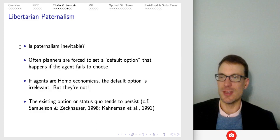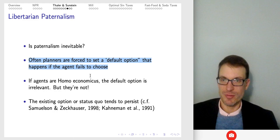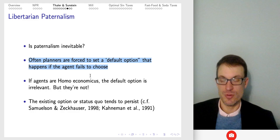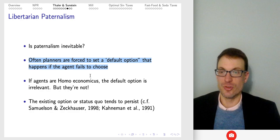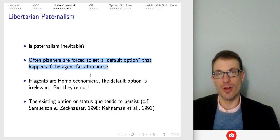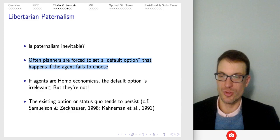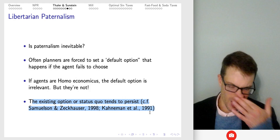Is paternalism inevitable? Often planners are forced to set some default option that happens if the agent fails to choose. Think about organ donation — in all the states I've lived in, when you go get your driver's license, you have the ability to opt in to be an organ donor, but by default you're not. Same with voting registration — by default you're not enrolled as a registered voter; you have the ability to opt in. If agents were homo economicus, the default option would be irrelevant because people would choose what's best for them. But people are not homo economicus — whatever is set as the status quo tends to persist. People have a lot of inertia and they won't change.